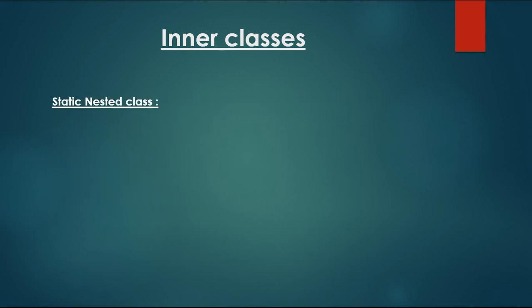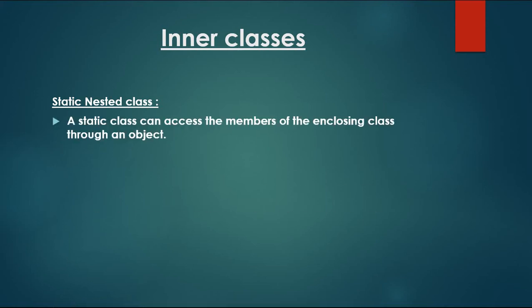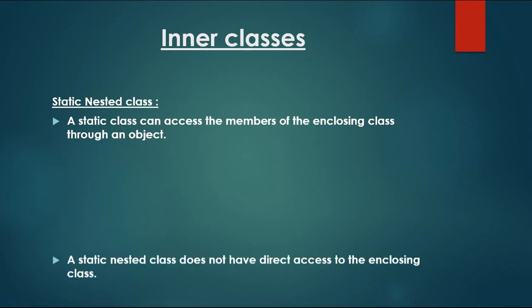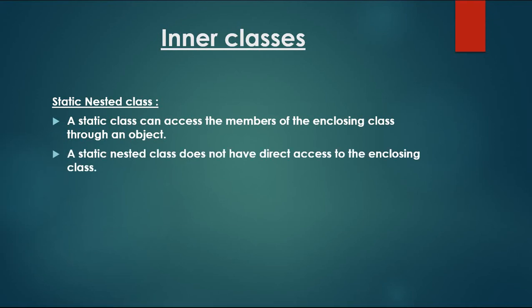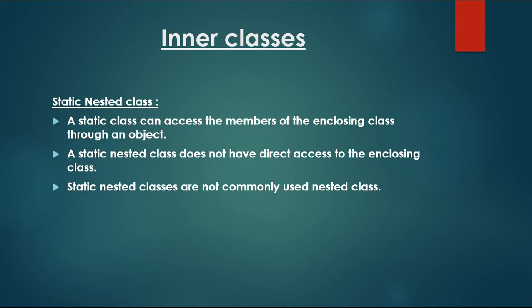A static nested class is nothing but a class that can access all the members of the enclosing class through an object. That means a static nested class does not have direct access to the enclosing class — it needs an object of the outer class for accessing the members of the outer class. This is why static nested classes are not commonly used for development purposes.